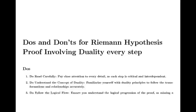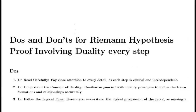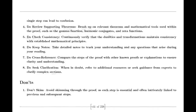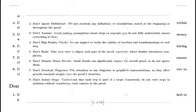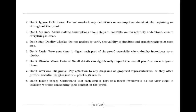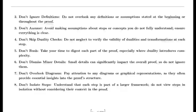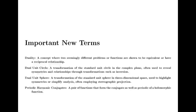Euler also tackled the Basel problem, which was concerned with finding the exact sum of the reciprocals of the squares of the integers. By examining the sine function and its product representation, Euler derived a formula showing that this sum equals π²/6. This was a significant achievement in mathematics and highlighted Euler's ability to uncover connections between different mathematical concepts.